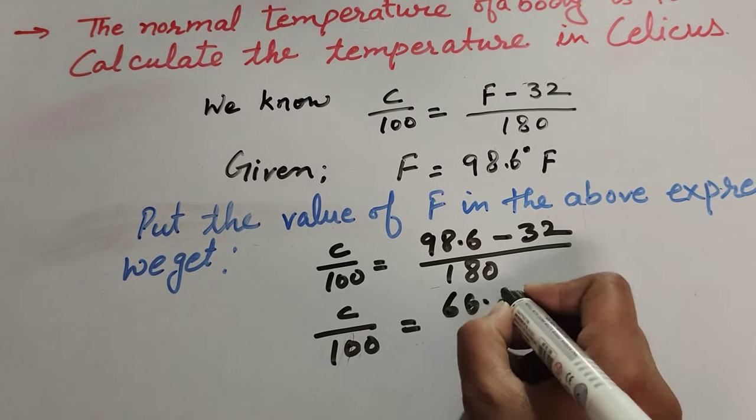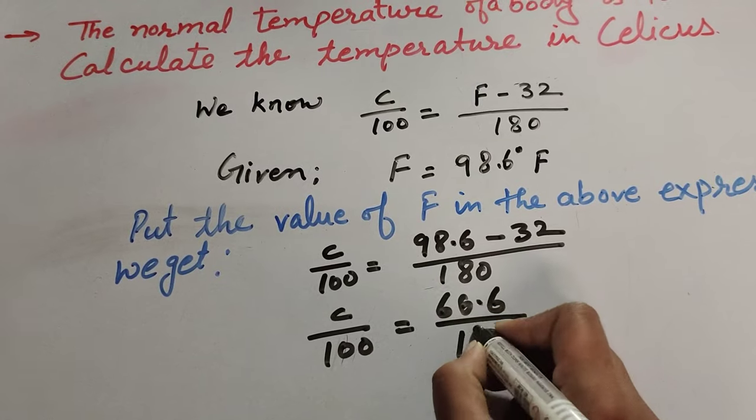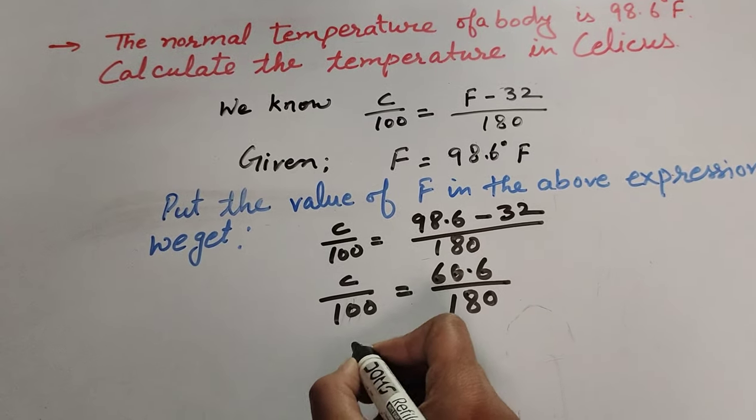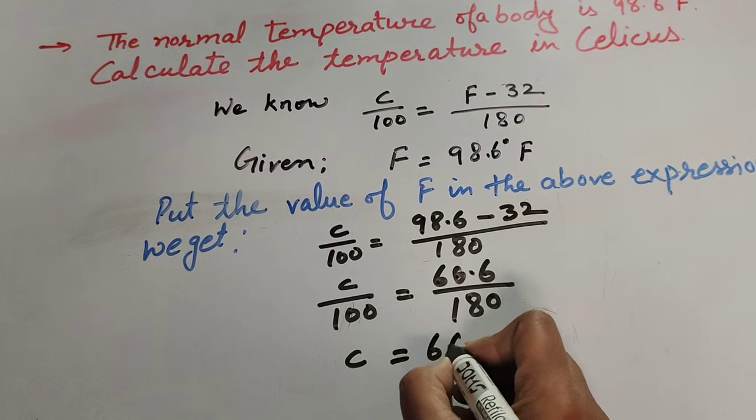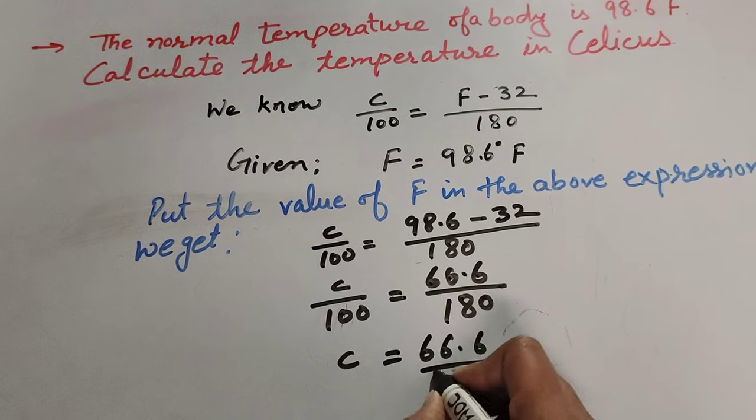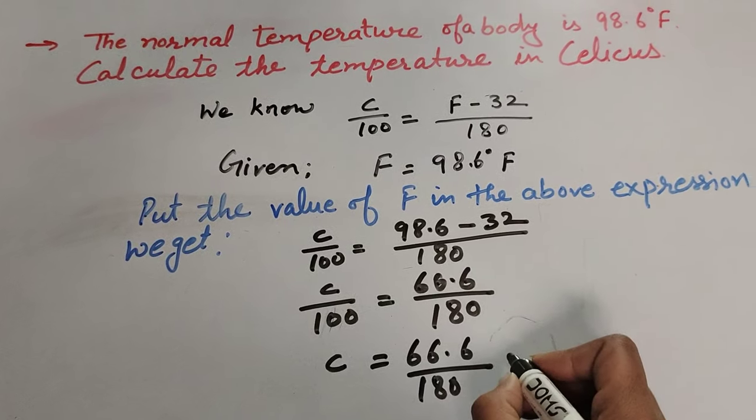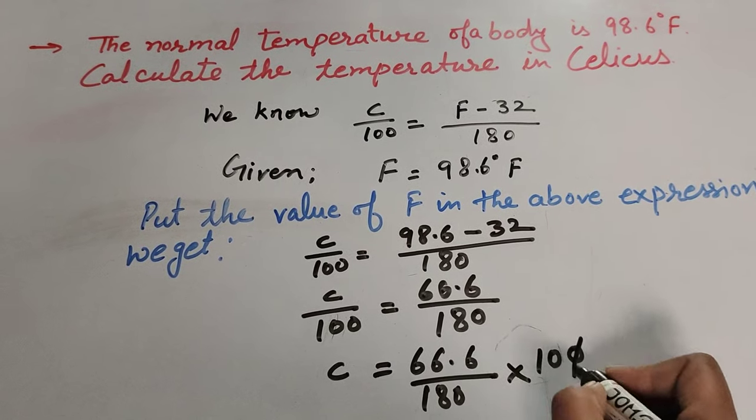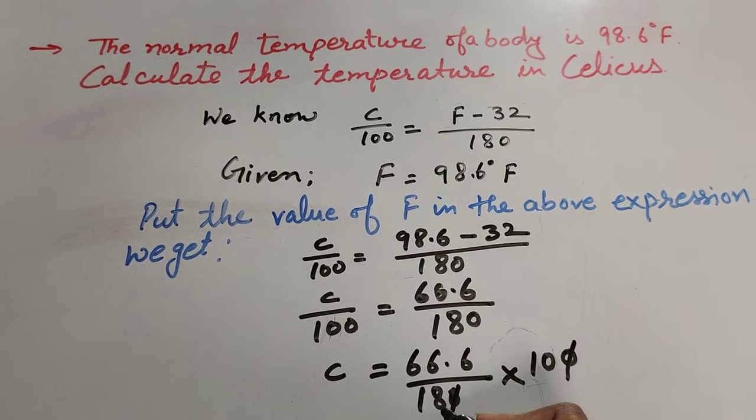We get the answer 66.6 over 180. So C is equal to 66.6 over 180.